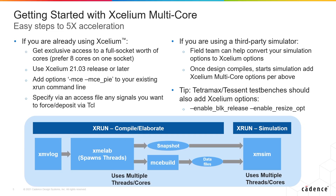If you're using a third-party simulator, the Cadence field team can help you convert your simulation and options over to Accelium. Once the design is compiling and simulating, we recommend switching to Accelium, adding those two options, and running faster. A tip: if you're doing Tetramax or Tessent testbenches, you should also add two options — enable_block_release and enable_resize_opt. There are constructs inside those testbenches that Accelium multi-core doesn't accelerate and leaves for Accelium single-core, which is not very efficient. These options will make it run more efficiently.